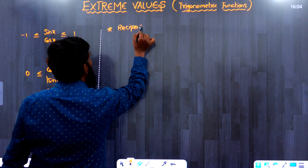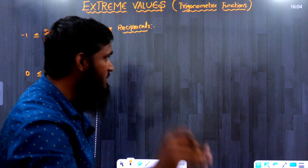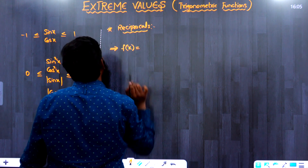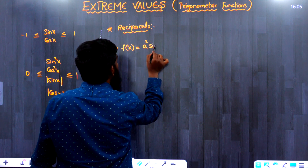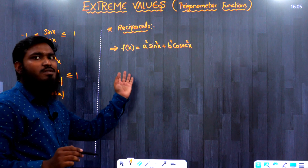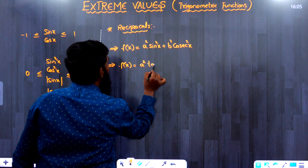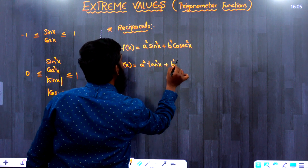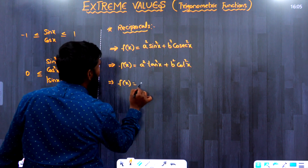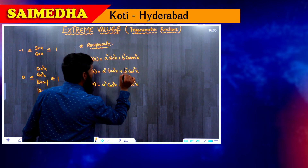In this video we'll be discussing an interesting topic related to reciprocals. The first function we take is f(x) = a²(sin²x) + b²(cosec²x). The second function is f(x) = a²(tan²x) + b²(cot²x). These are the three reciprocal-type functions we are considering.